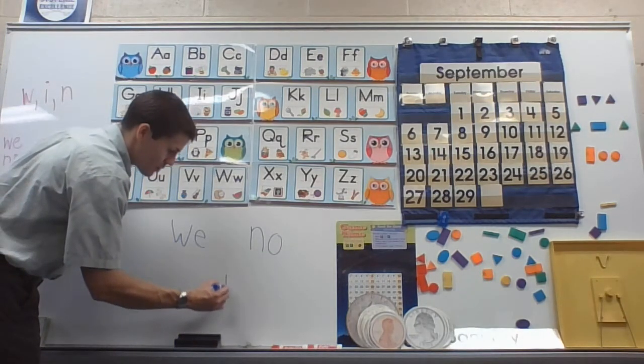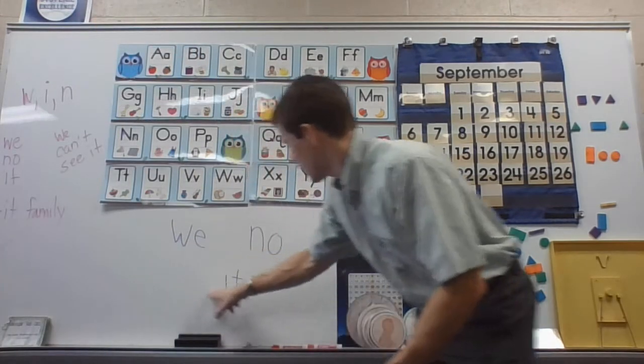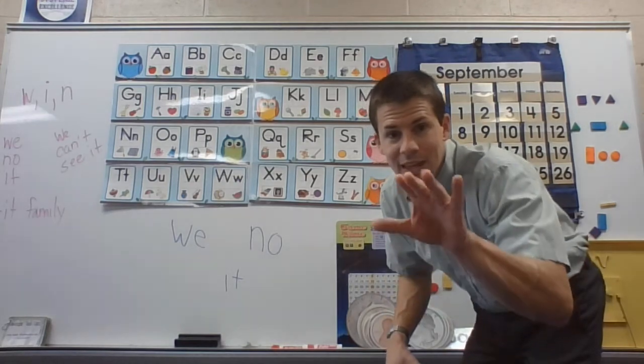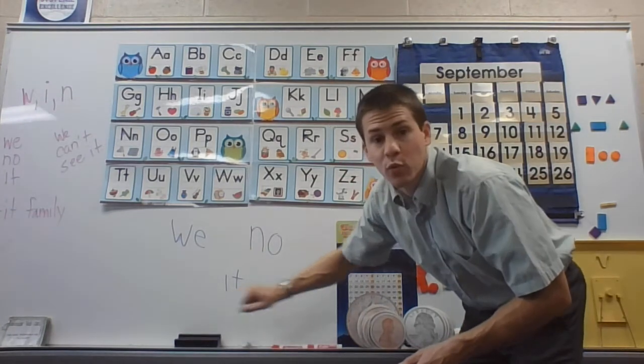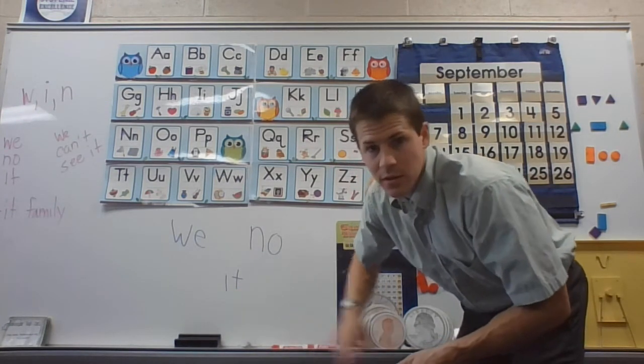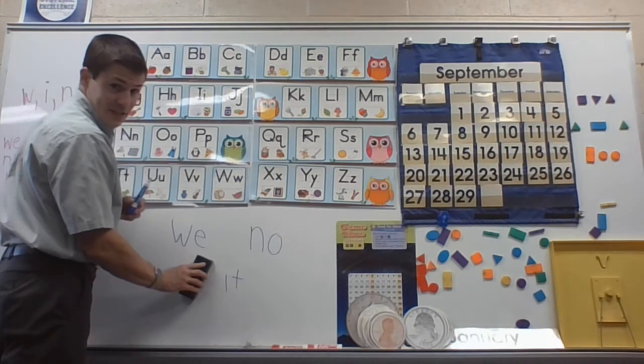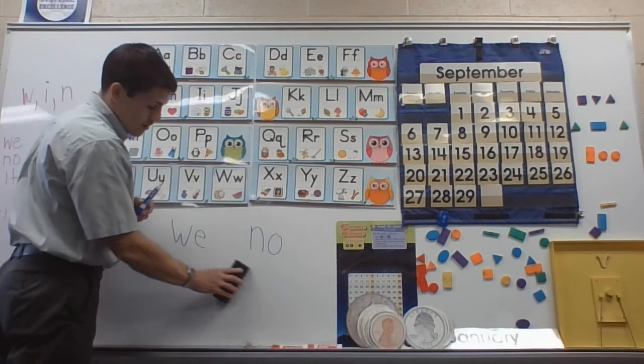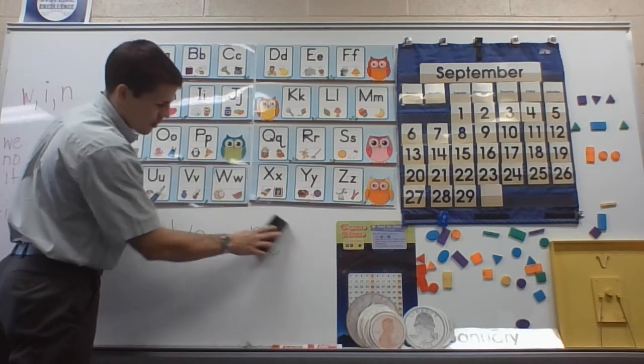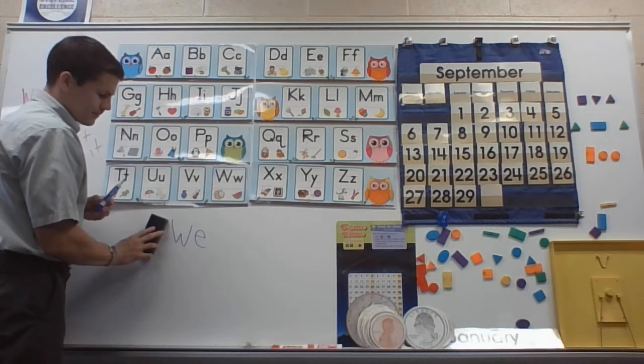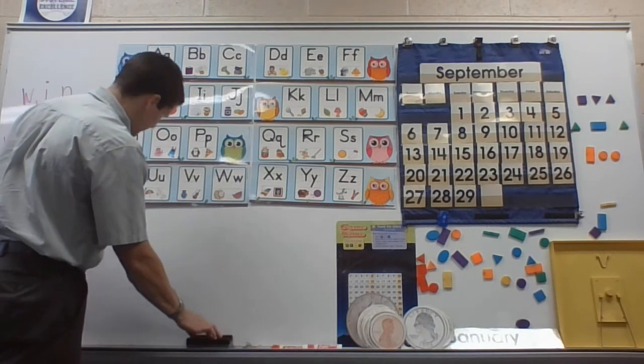And the third word is two letters. I-T. Do you know what I-T is? It. Everybody say it. Everybody read it. Just like, oh, it was fun. I'm going to erase it. Now, don't forget it. Because it's gone. What's this word again? No. Yes. I'm going to erase no. And don't forget we. It's W-E.